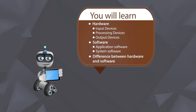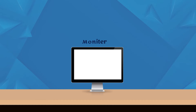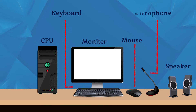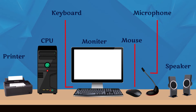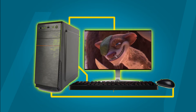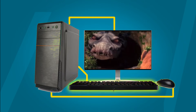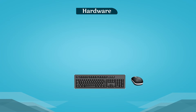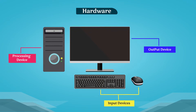You see a complete computer with all its basic parts such as monitor, keyboard, mouse and CPU. All these parts are connected to each other and work together to form a computer system. A computer system has different parts that together make it work. These parts are hardware and software. Computer hardware is a collection of all parts of a computer that we can touch and see. These hardware are categorized into three parts.